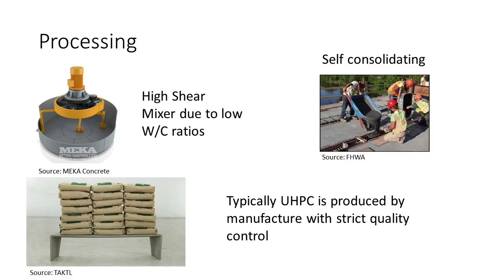Some of the biggest challenges with the processing of ultra high performance concrete is the low water-cement ratio. Because of this, it needs to be mixed in a high shear mixer. There's an example of a high shear mixer here, which is a planetary mixer. It's able to deliver the energy into the mix to mix it with those low water-to-cement ratios.